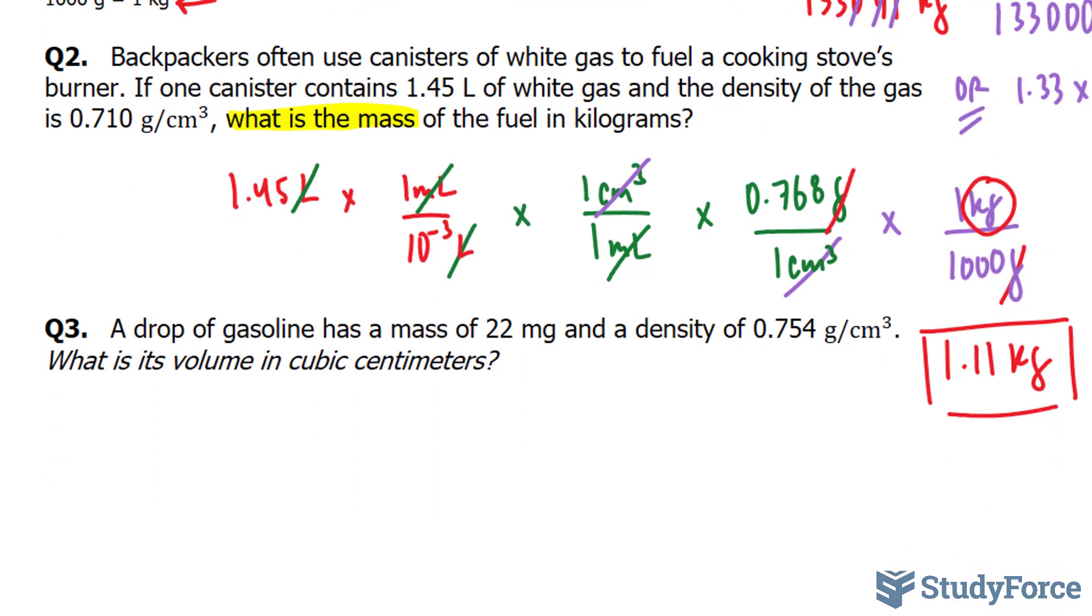Let's move on to question 3. A drop of gasoline has a mass of 22 milligrams and a density of 0.754 grams per centimeters cubed. What is the volume in cubic centimeters? This question is slightly easier than question 2. We've been given the mass of the gasoline. It's 22 milligrams, so this has two significant figures and this has three significant figures. Our final answer should have two.